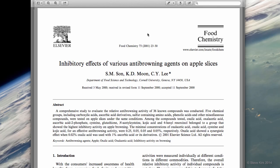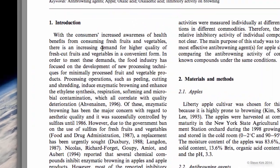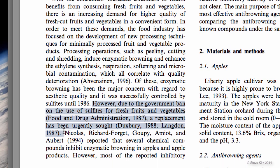First, here is a study that examines the effect of different chemicals on preventing the browning of apple slices. Here's the introduction. It starts with some facts about preserving fruit that shows us why this topic is important, and then it introduces the topic of browning right here. Then it introduces the problem that we need to solve — that a replacement technique for preventing fruit from browning has urgently been sought.